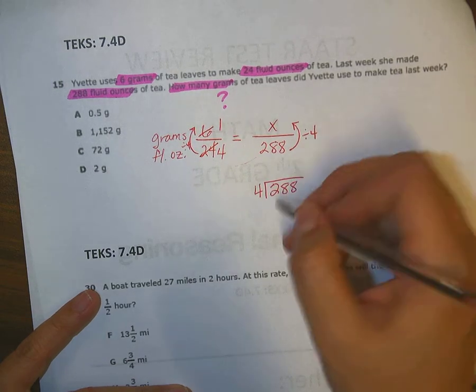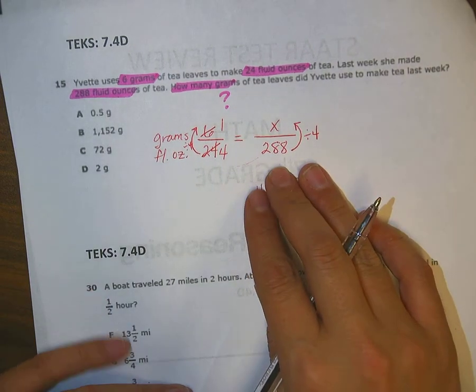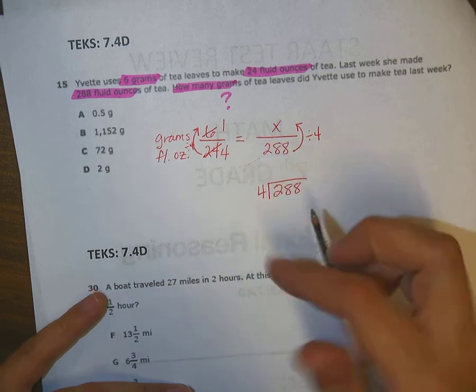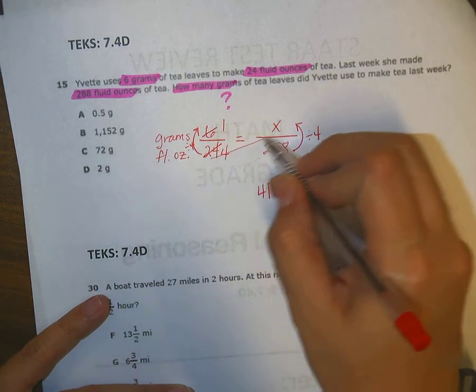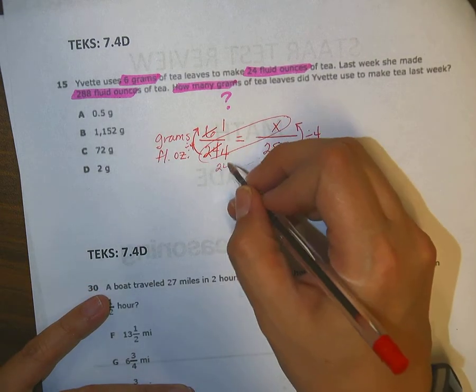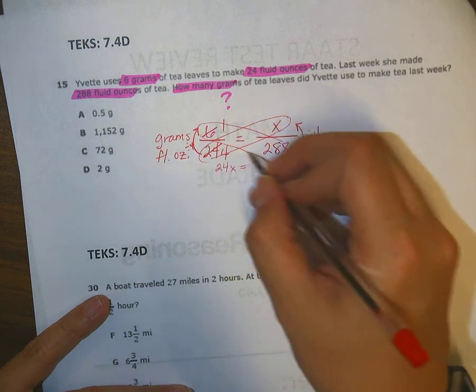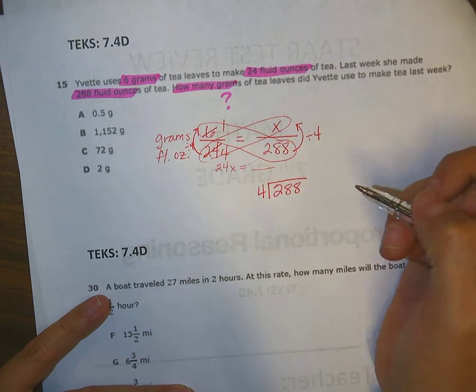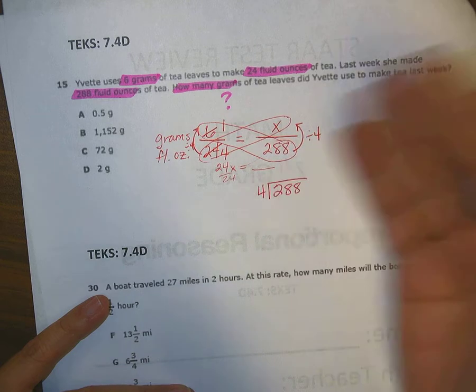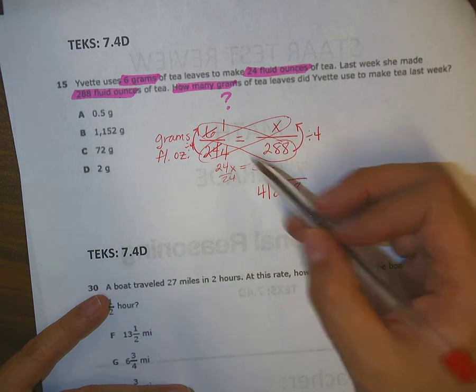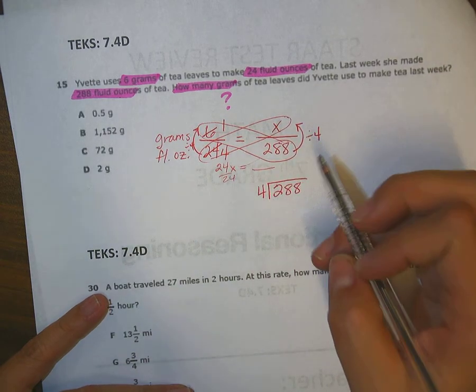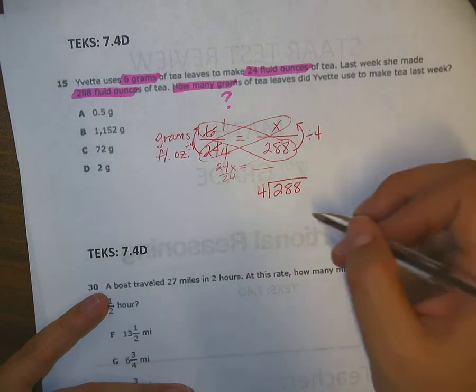288 divided by 4. Now before I do that, let me explain that you could also cross multiply, right? Do the butterfly method. That would be 24x equals whatever 288 is times 6. Then you would divide by 24. I think that's harder just because the numbers are so big. And there are more steps sometimes, and so you can end up making a mistake.